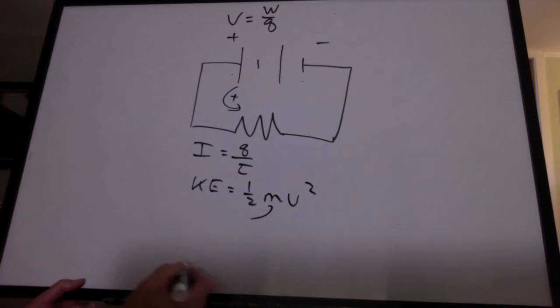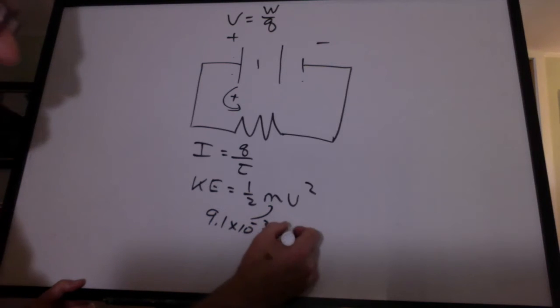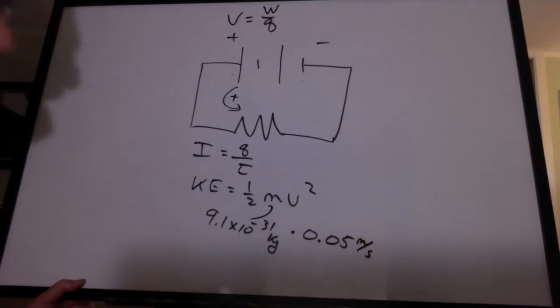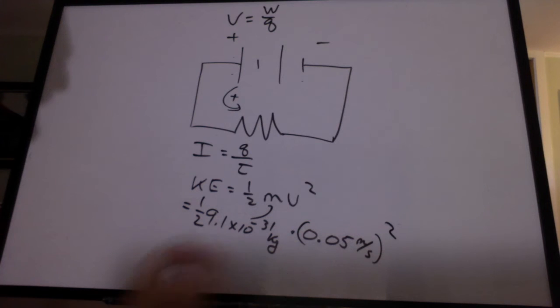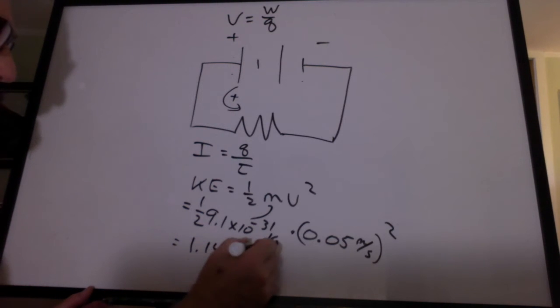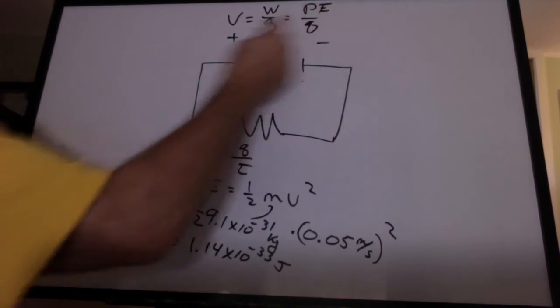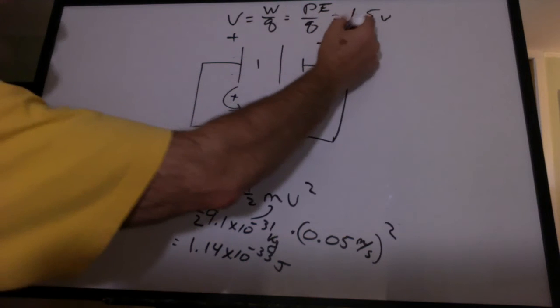Well, it turns out that the mass of an electron, which is the ones that are really moving, is very small. It's about 9.1 times 10 to the negative 31 kilograms. And the velocity of these electrons is very slow. It's on the order of something like maybe 0.05 meters per second, depending on the current. When you do the math for this, the kinetic energy is really small. I did about 1.14 times 10 to the minus 33 joules. Now, that's kinetic energy.